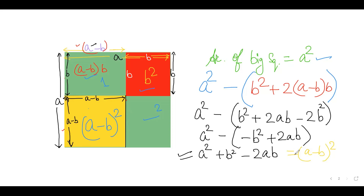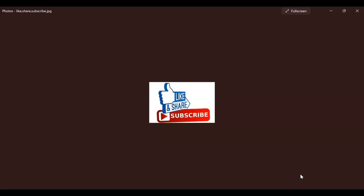I hope both identities are clear now. To try this yourself, take a plain white paper, draw squares with your own measurements, and color the portions — or use colorful sheets, cut them out, and paste them together. Either activity helps you verify these results hands-on. If you liked this video, please like, share, and subscribe. Thank you, bye-bye!